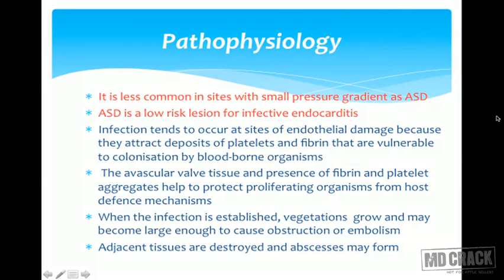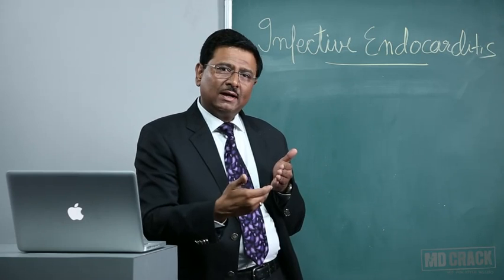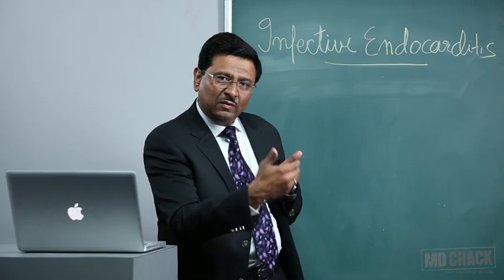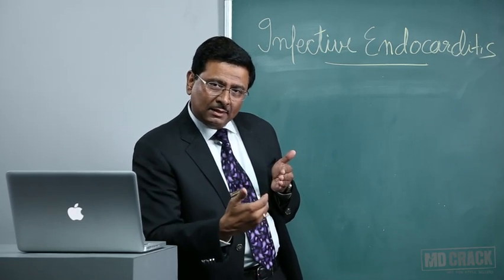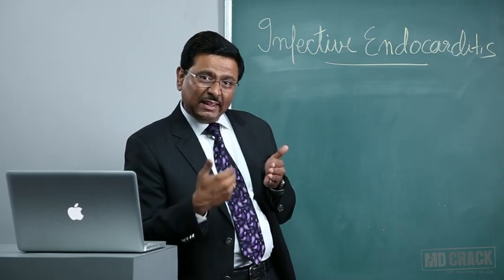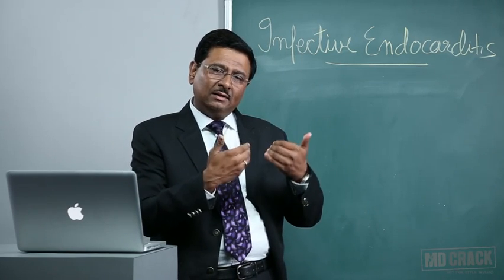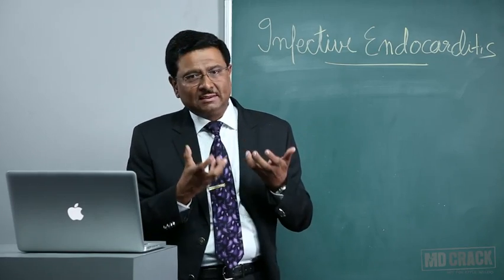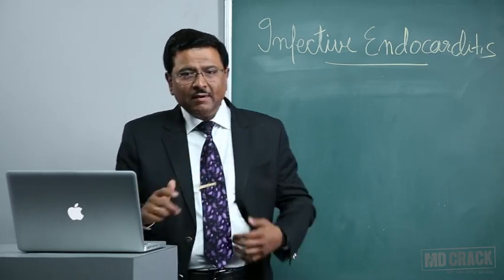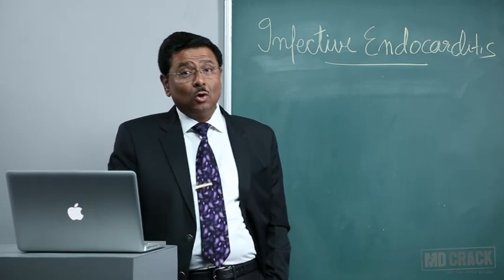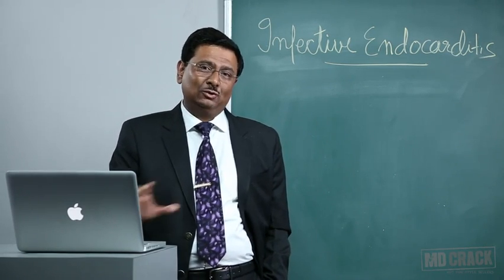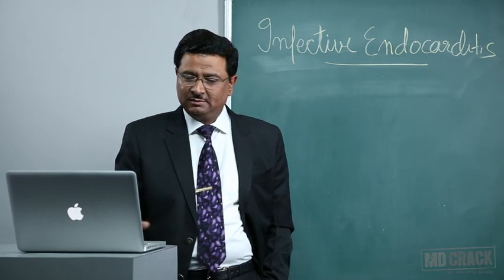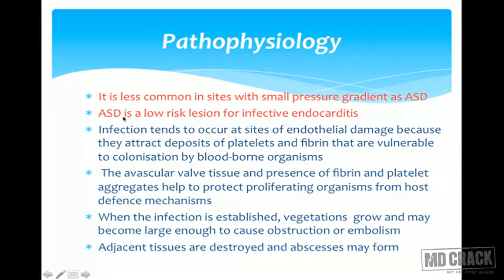An MCQ may be framed listing VSD, coarctation of aorta, and ASD together. The pressure difference in both atria in ASD is small, so infective endocarditis is less commonly seen there. ASD is the knockout choice in such a question — ASD is a low-risk lesion for the development of infective endocarditis.